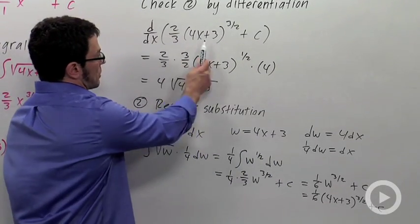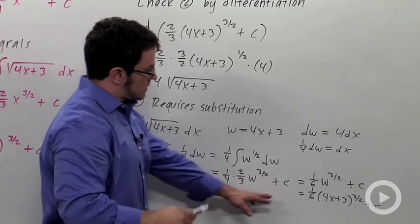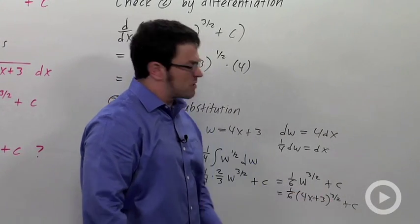Not exactly the same as the 2 thirds that I thought it was before. This is the correct answer. 1 sixth 4x plus 3 to the 3 halves plus c.